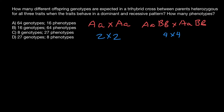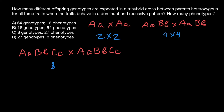In today's problem we have a trihybrid cross. One parent is heterozygous for gene A, heterozygous for gene B, and heterozygous for gene C, and we cross with another parent that is also heterozygous for all three genes. If we were to build a Punnett square, it would be 8 by 8, so the total number of cells would be 64. It would take about 30–40 minutes to build such a Punnett square and find all the probable genotypes and phenotypes.